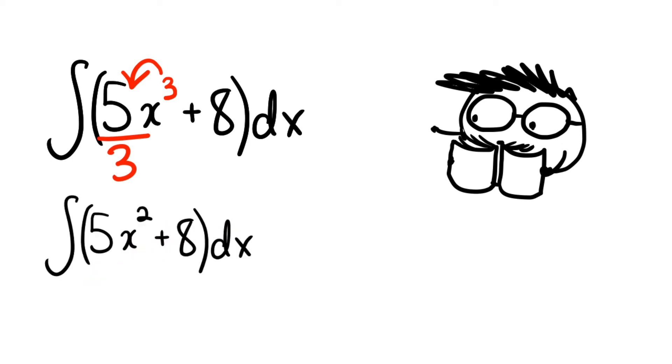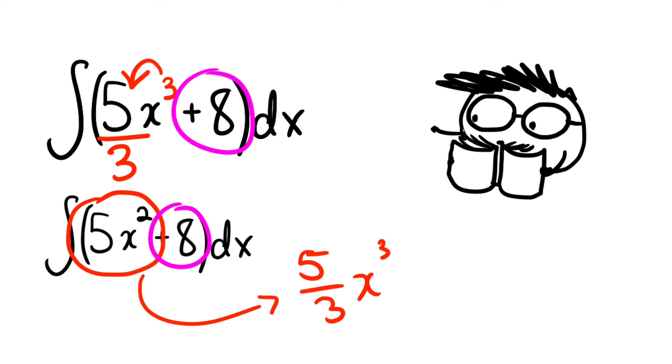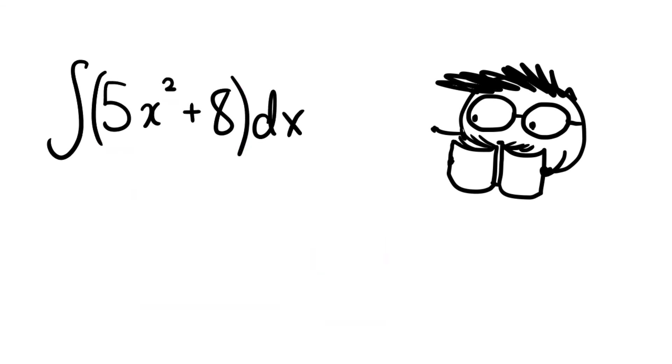There, we have now found the integral of 5 times x to the power of 2. We can do the same thing for 8, where we add an x or 1 to the exponent and divide the coefficient by the exponent, which in this case is 1. So, since the integral for 5 times x to the power of 2 is 5 divided by 3 times x to the power of 3, and the integral for 8 is, well, 8 times x,